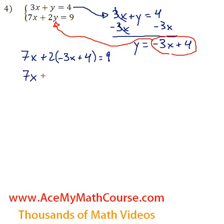Excellent, so 7x plus the 2 will distribute. So 2 times negative 3x is negative 6x. So just rewrite this as minus 6x. Then 2 times 4 is just 8. The whole thing is equal to 9.